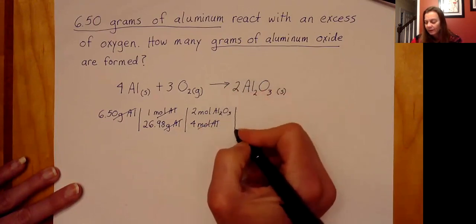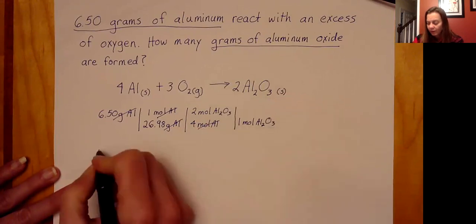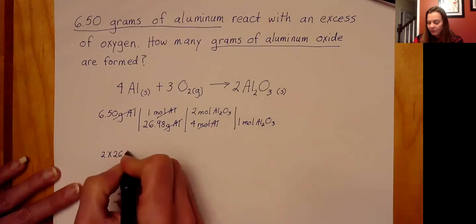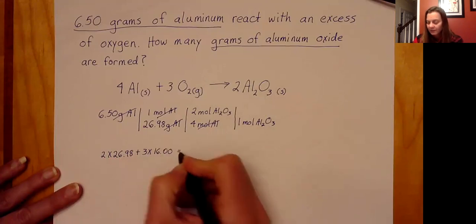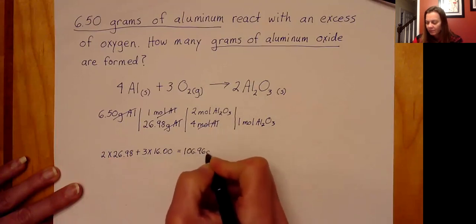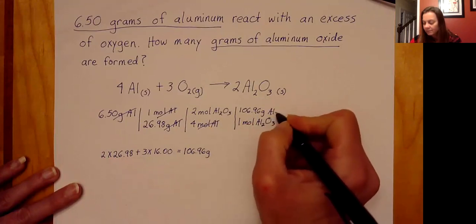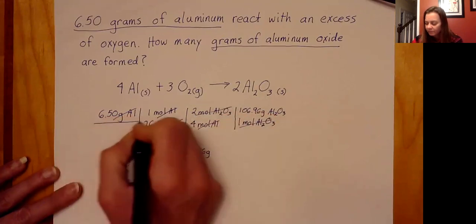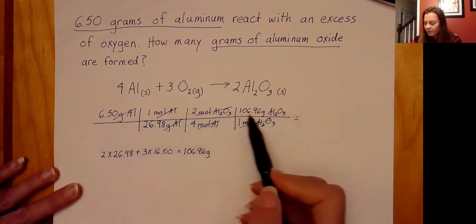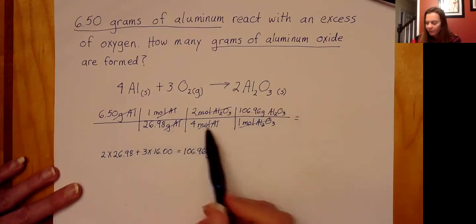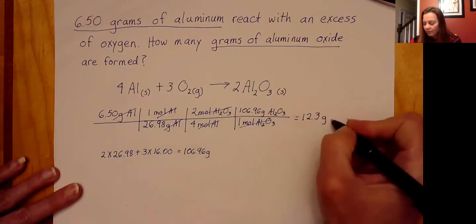To convert from moles to grams, I determine the molar mass of aluminum oxide: 2 times the mass of aluminum (26.98) plus 3 times the mass of oxygen (16.00) gives 106.96 grams per mole of Al2O3. The moles cancel out, and doing all the math — 6.5 × 1 × 2 × 106.96 ÷ (26.98 × 4) — gives me 12.3 grams of aluminum oxide.